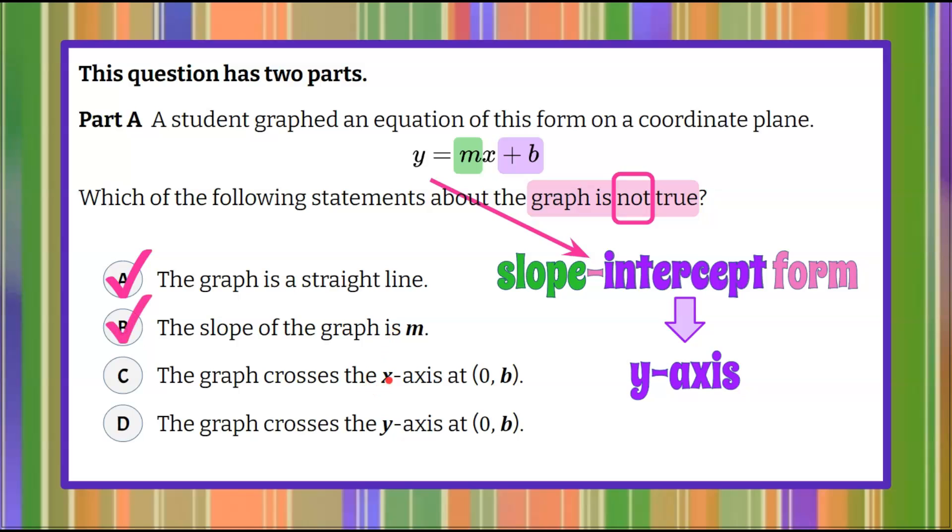Now we can see that our next two choices are where the graph crosses. It says the graph crosses at the x-axis and this choice D says crosses at the y-axis. So we can see that B, or our point 0B, is the intercept where it crosses the y-axis, and that is true.